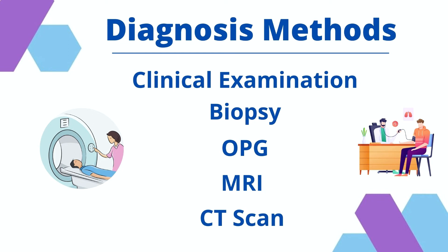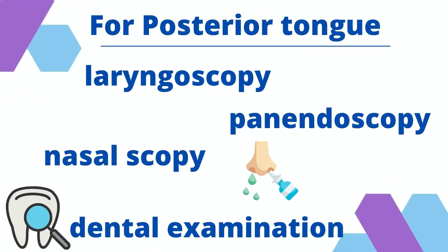What are the diagnosis methods? We do a clinical examination — we look into the mouth, look into the neck, look at the nodes. We take a biopsy from the suspected area, or do an FNAC from the neck nodes to see whether they are involved. We do an OPG to look at the dentures, and a CT scan. We may also do an MRI, especially for the tongue, because soft tissue is better evaluated by MRI — it tells us whether the lesion has crossed the midline or not. For the posterior part of tongue and oropharyngeal malignancies, we may require laryngoscopy, pan endoscopy, or nasal endoscopy. We also require a dental examination to make sure the dentures are in the right place.